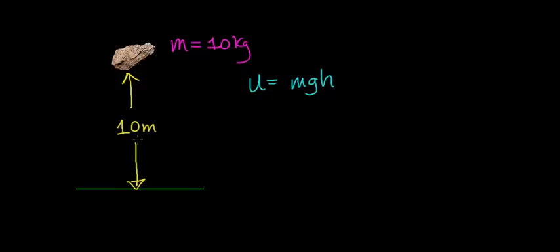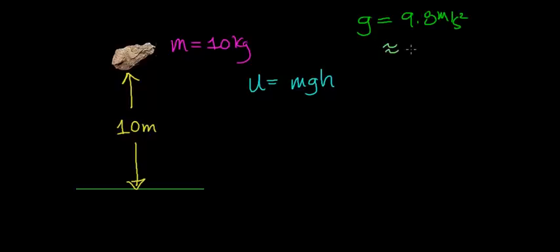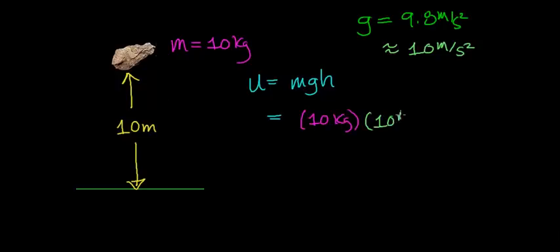In this case, this rock can fall a total distance of 10 meters, and it has a mass of 10 kilograms. The acceleration due to gravity here on Earth is about 9.8 meters per second squared — meaning any object on Earth that's falling speeds up by 9.8 meters per second per second. To simplify the math, let's approximate this acceleration to 10 meters per second squared. So we're going to multiply the object's mass of 10 kilograms, times the acceleration due to gravity approximated at 10 meters per second squared, times the distance this rock can fall, which is 10 meters.